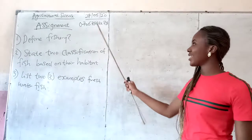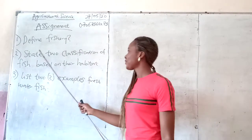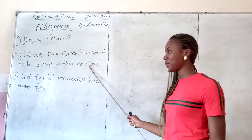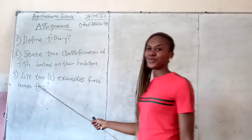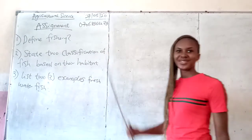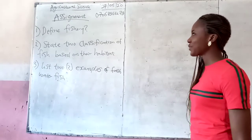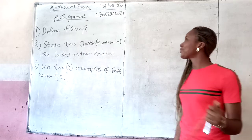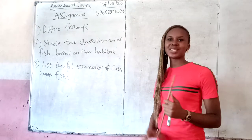This is your assignment. One: define fishery. Two: state the classification of fish based on their habitat. Three: list two examples of freshwater fish. Please submit the assignment to the above WhatsApp number. Remember to write this assignment in an exercise book, snap it, and submit it. Thank you.